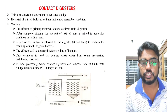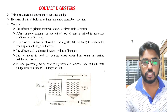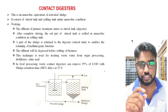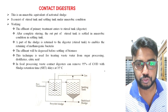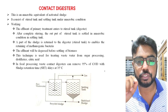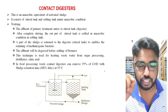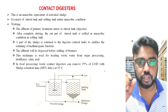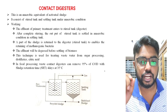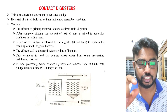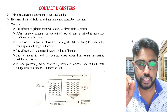Now we can see the first method: contact digesters. This contact digester is the anaerobic equivalent of an activated sludge process that is used in aerobic treatment. Contact digesters contain mainly two tanks — one is a stirred tank and another is a settling tank — and these are maintained in anaerobic conditions.